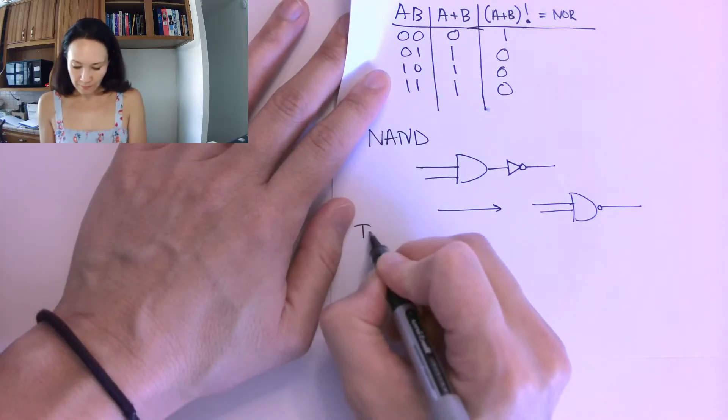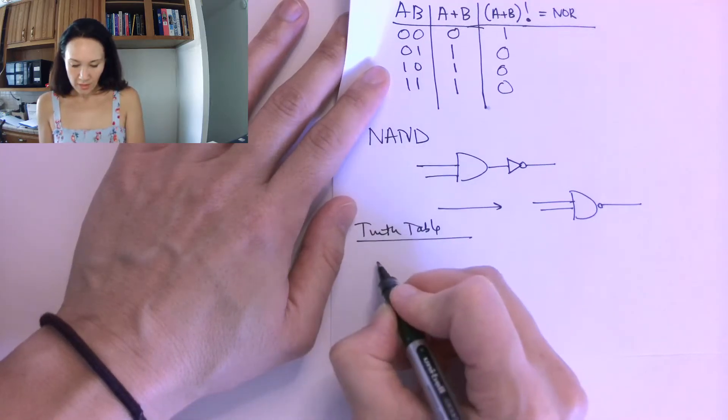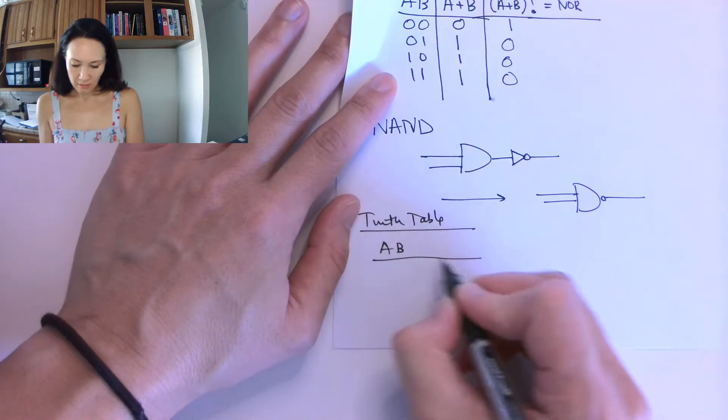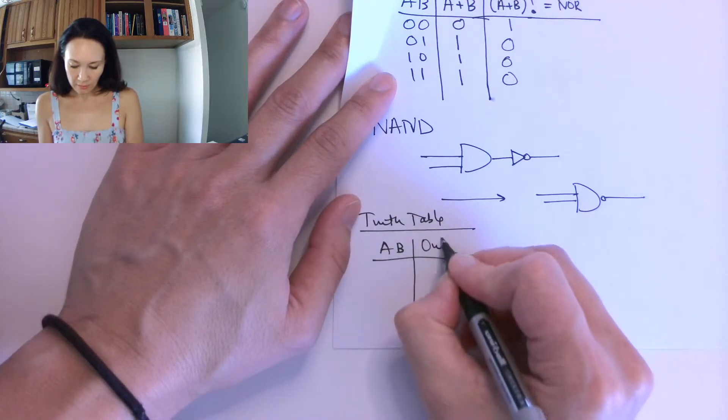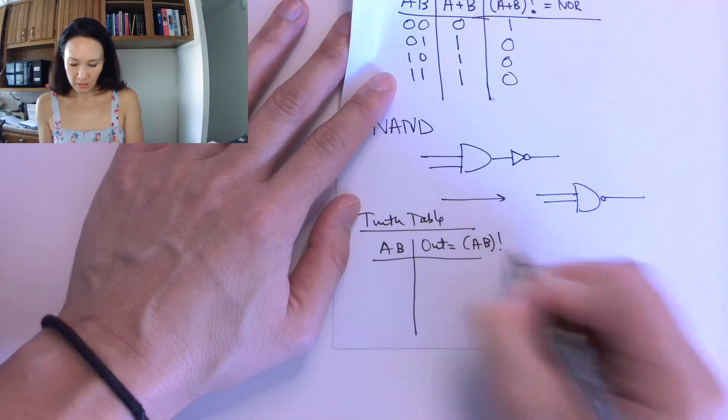And the truth table for inputs A and B, our output is going to be A and B naught.